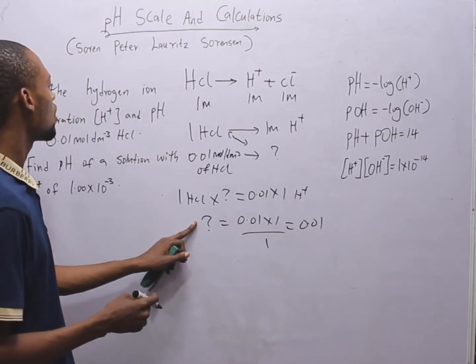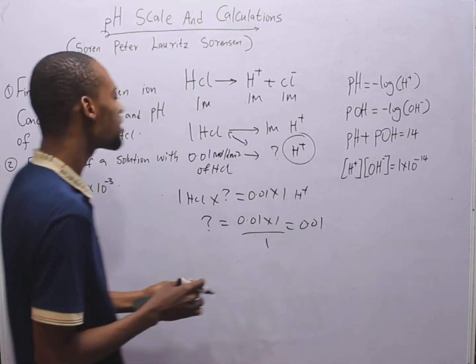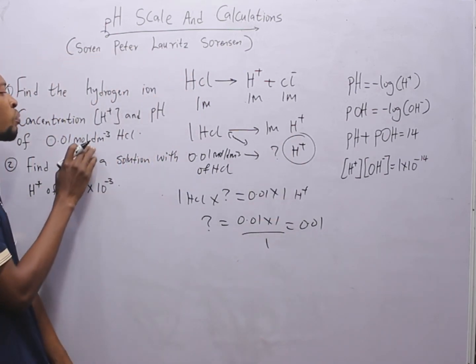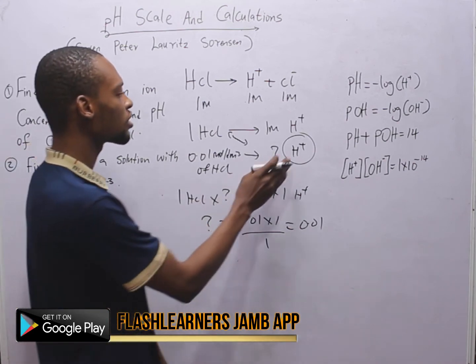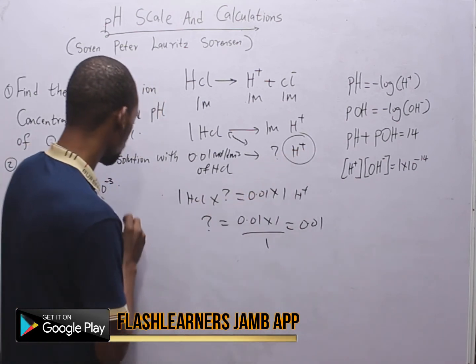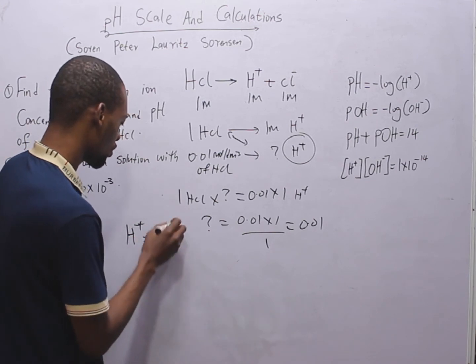What is question mark? Question mark is simply H plus. That is, gotten from 0.01 mol per dm cube of HCl. So, we solve H plus and it simply equals 0.01.